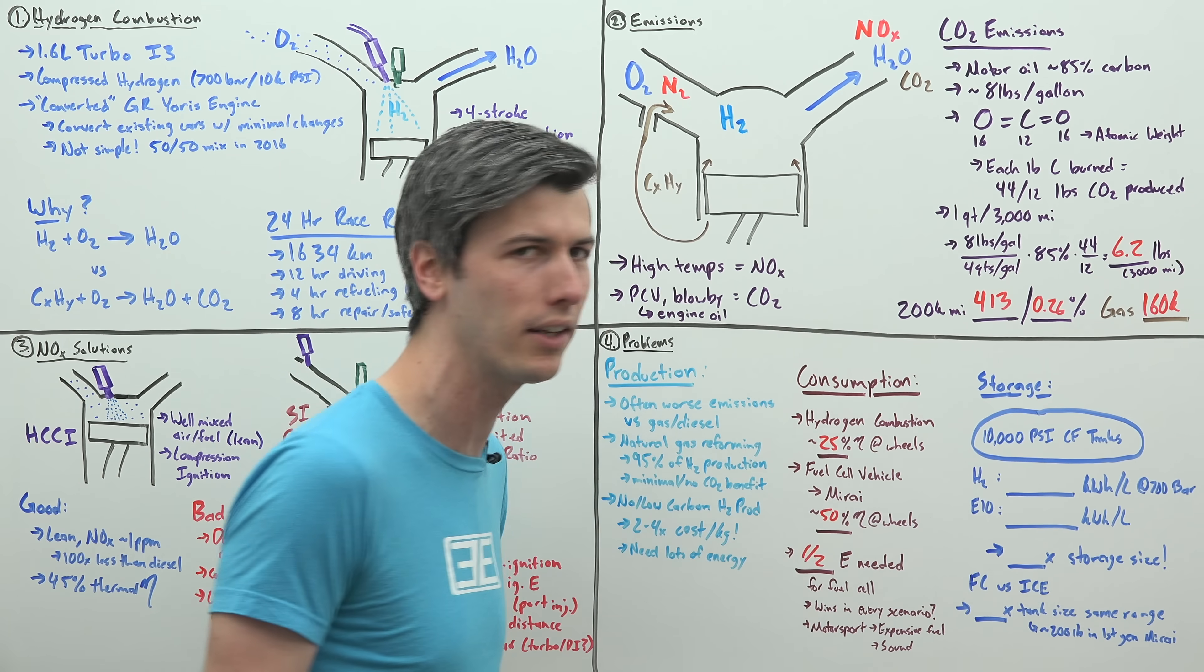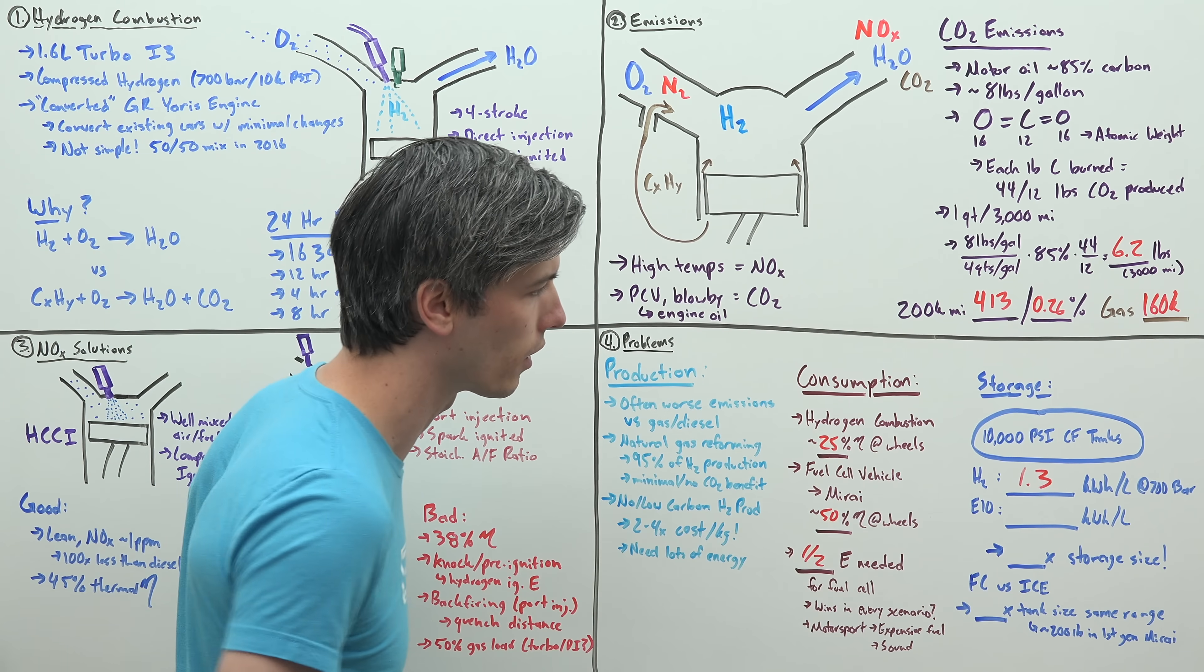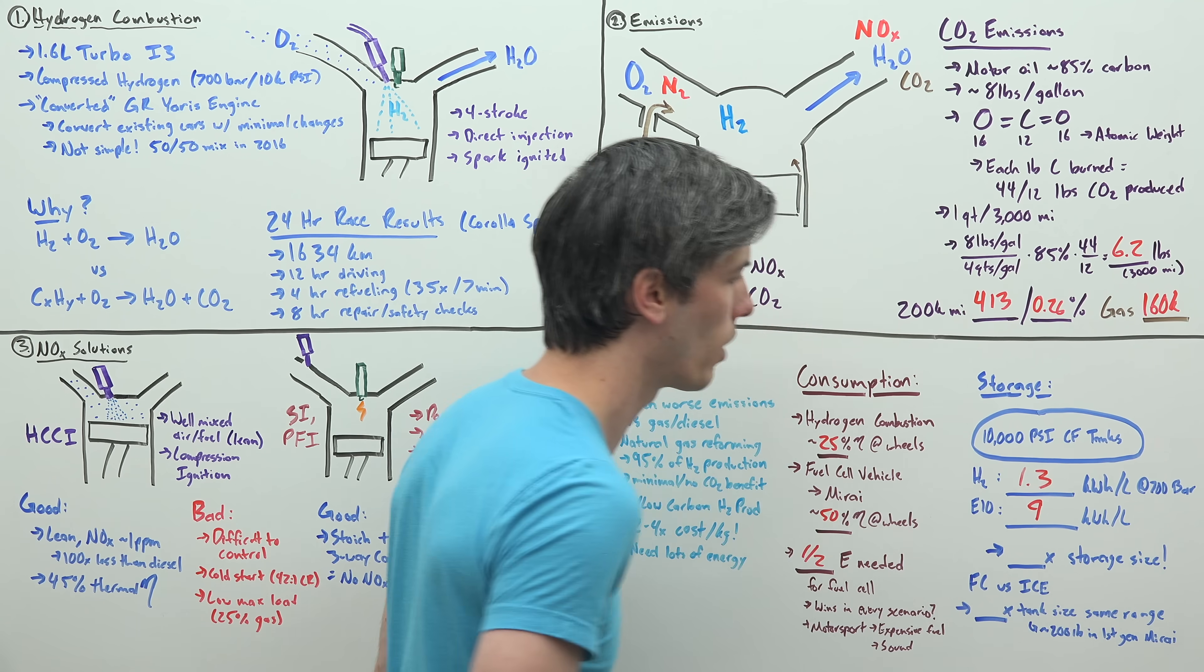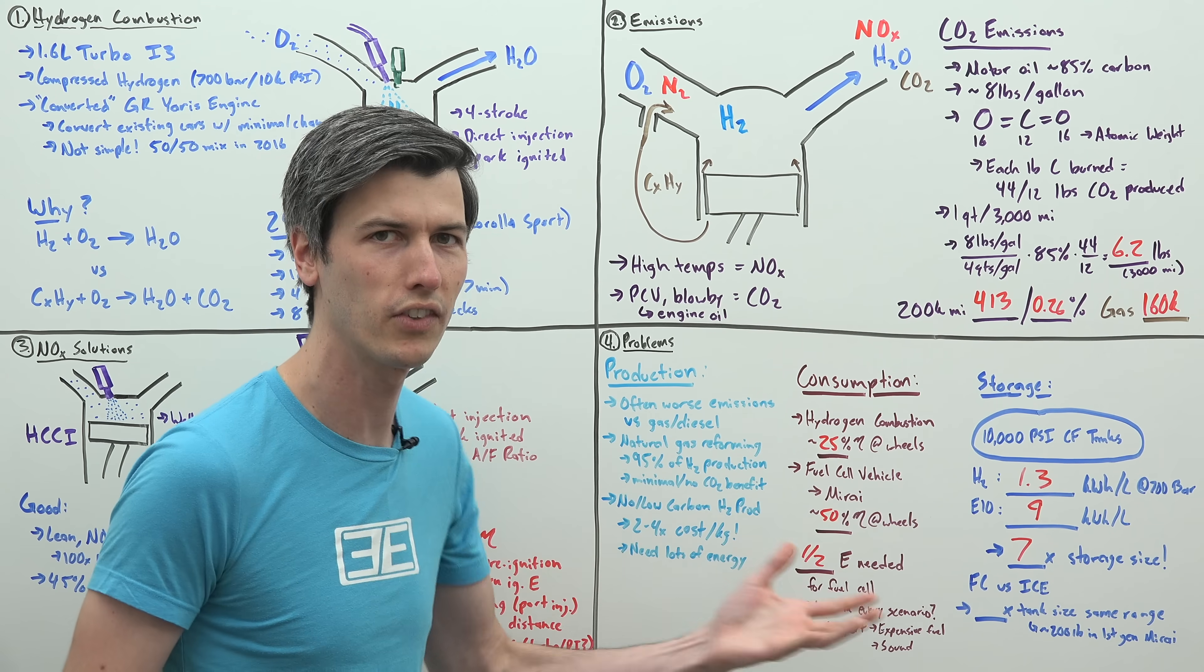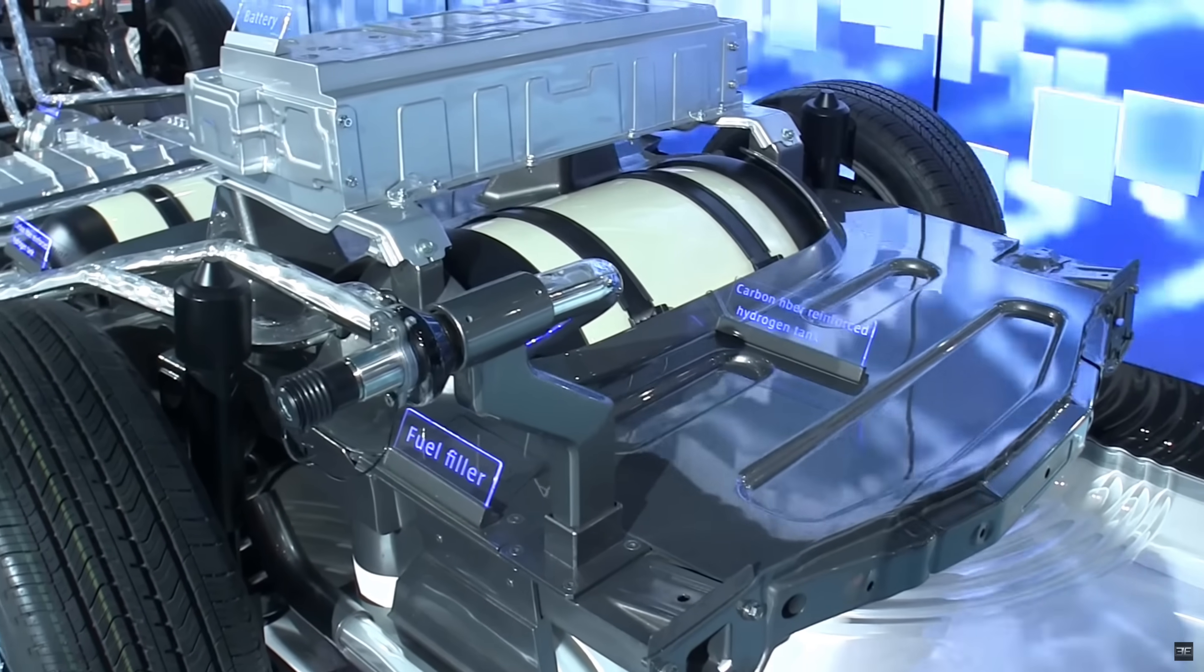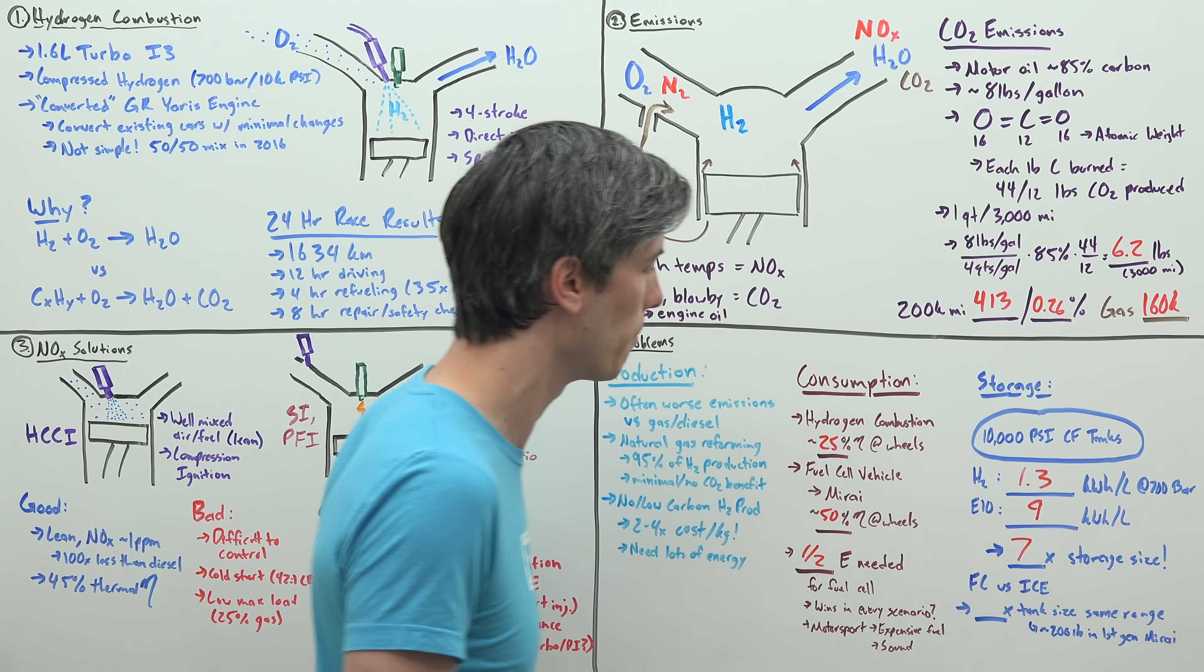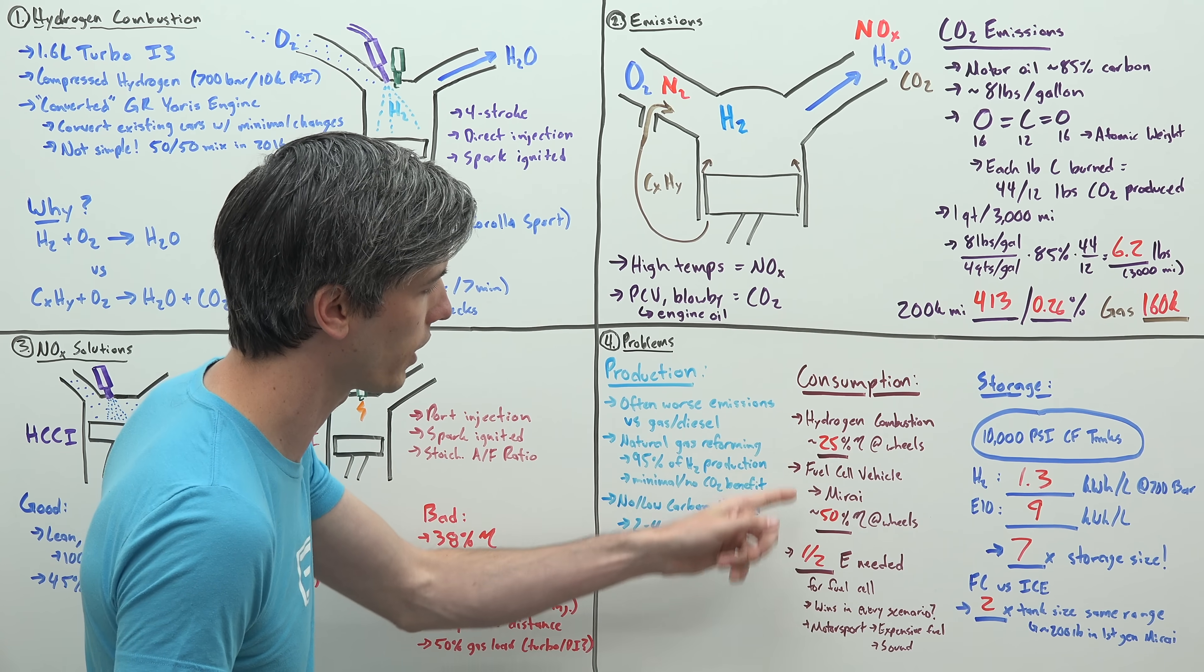But even at 10,000 PSI, this compressed hydrogen has an energy density of 1.3 kilowatt hours per liter. That's at 700 bar, 10,000 PSI, versus E10, 10% ethanol gasoline in the United States. That's about 9 kilowatt hours per liter. So a seven times difference in storage size if you want the same amount of energy. You're going to have these massive storage tanks for the fuel. They have to be heavy duty and strong in order to have this really high pressure hydrogen.